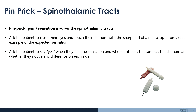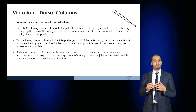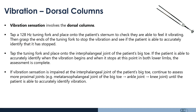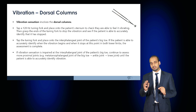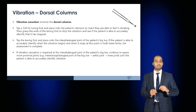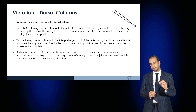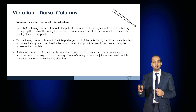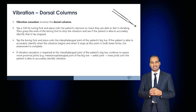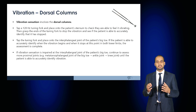Pin prick or temperature is used to examine spinothalamic tracts using the sharp end of a neurotip. For vibration, which assesses the dorsal columns, a 128 Hz tuning fork is first placed on the sternum to ensure the patient can appreciate vibration rather than just cold temperature. The tuning fork is then placed on the interphalangeal joint of the big toe with the patient's eyes closed; ask them to identify when vibration begins and stops. If they cannot accurately discern this, move the tuning fork more proximally — sequentially from the metatarsophalangeal joint, to the ankle joint, the knee joint and the hip joint — comparing left and right.